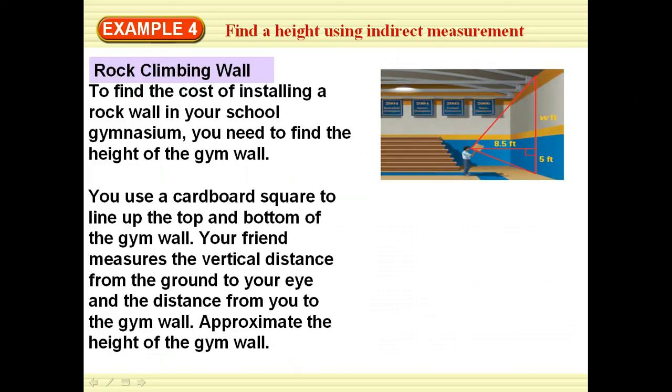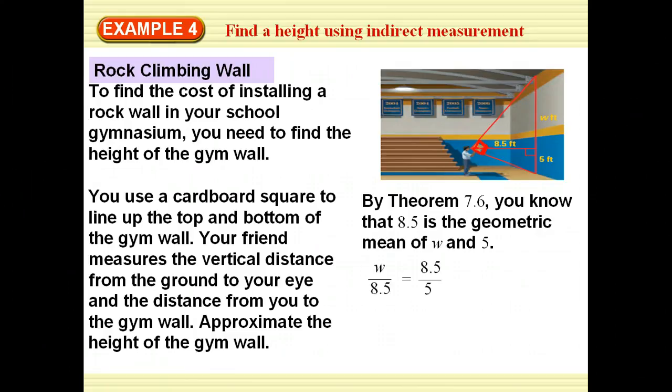In this case, we're going to see how we could use this in a real world application. We're trying to find how tall the gym wall is. What we do is we have a right angle here. He took a square. He turns it corner to corner so he's looking from one corner to the other out to the wall. He has a friend measure that his eyes are 5 feet tall and his eye is 8.5 feet from the wall. Now what you can see is I have an altitude. And we know that the altitude is the geometric mean between the two parts of the hypotenuse. So according to our theorem,